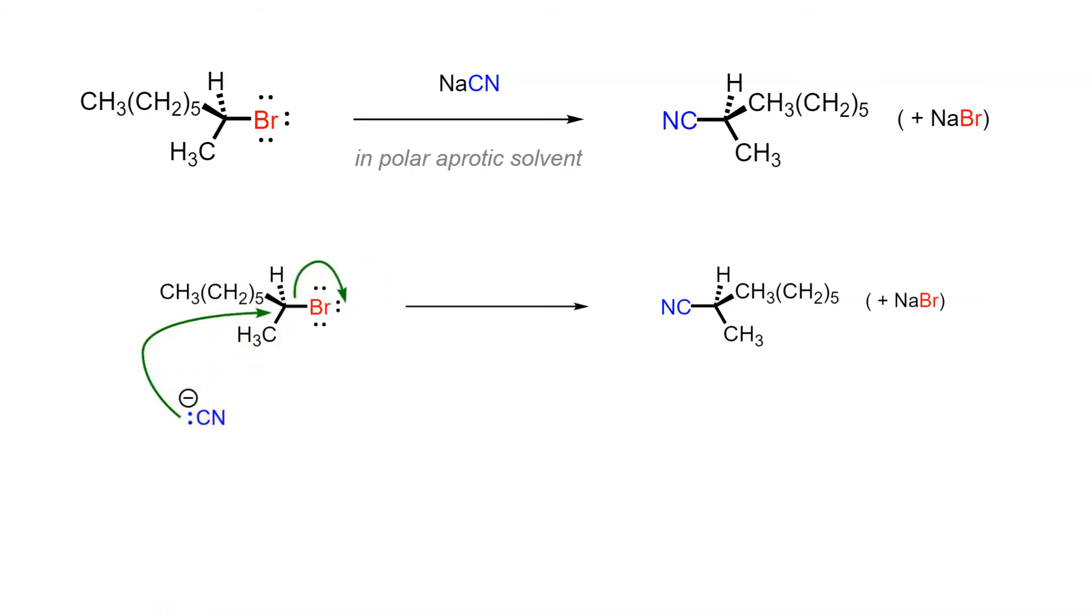This is necessary for the nucleophile to deliver its electron pair into the sigma star antibonding orbital of the bond that is holding the carbon and the leaving group together.